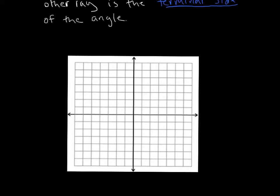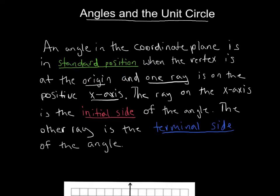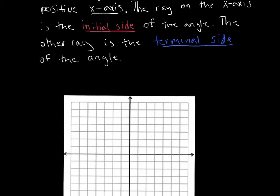We're going to talk about some angles in specific positions. An angle in the coordinate plane is in standard position when its vertex is at the origin and one ray is on the positive x-axis. The ray on the positive axis we will refer to as the initial side of the angle and the other ray we will call the terminal side. It's important to understand these terms: the standard position, what a ray means — that's just the side of the angle — and the origin, which is the middle of the graph.